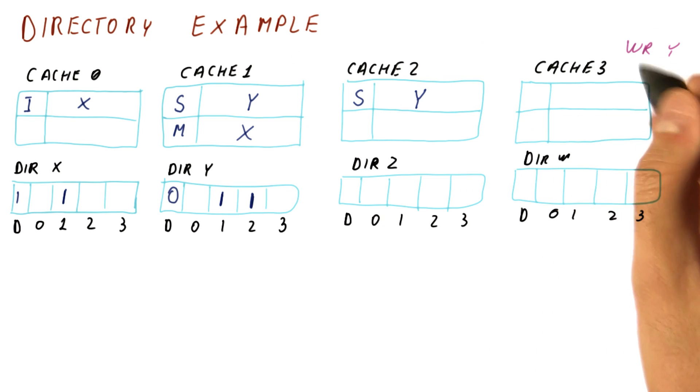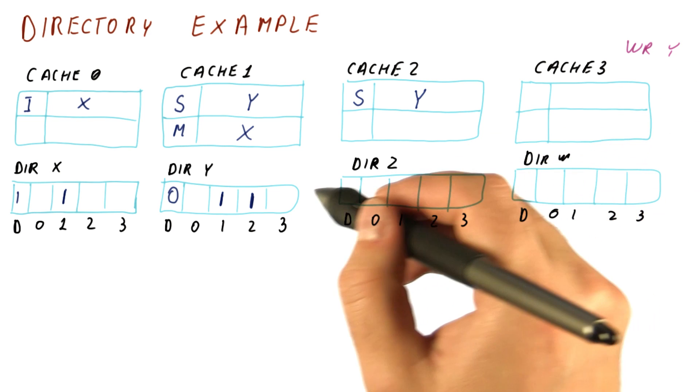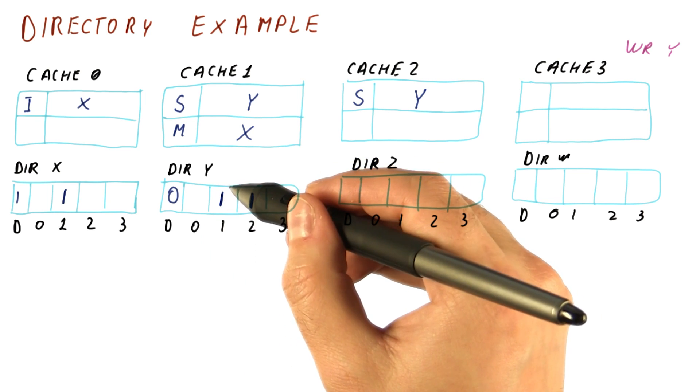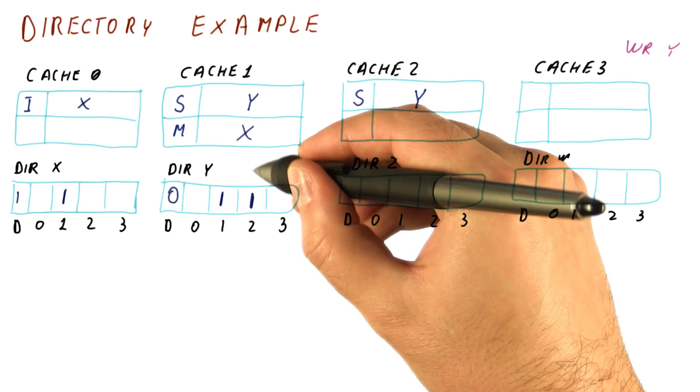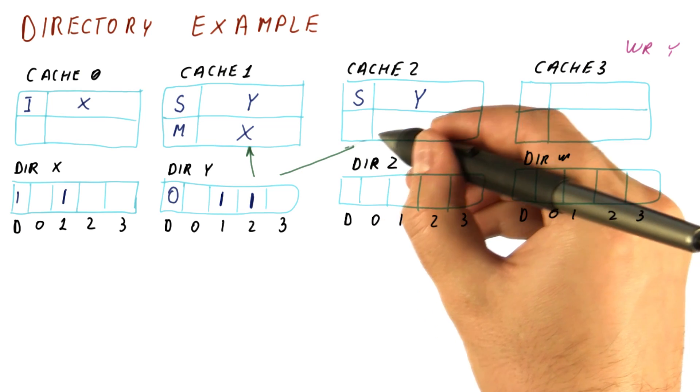Now let's say we want to write to y in this cache. This will be sent to the directory for y, so the message travels over here. The directory for y now sees that caches one and two might have the data, and that none of them are dirty. So it just sends the invalidation request to caches one and two.